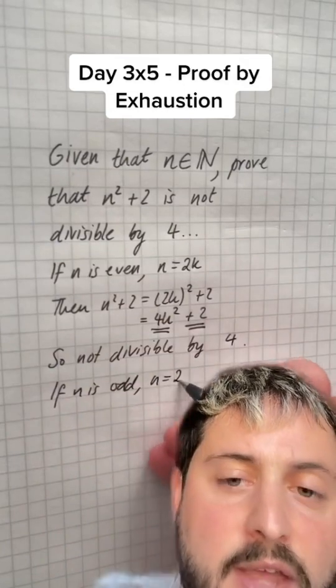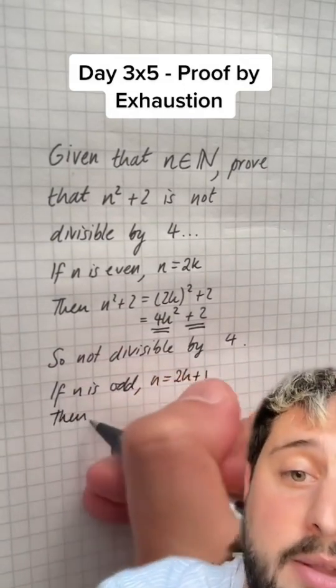Next, we check out the other options, which is that n might be odd. If n is odd, we could say that n is 2k plus 1.